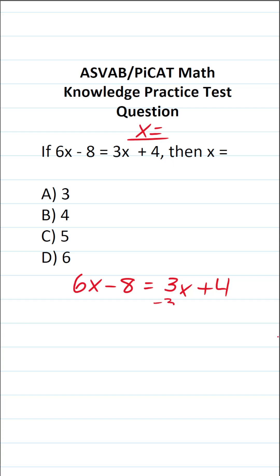The first thing I'm going to do is subtract 3x from both sides of the equation, because in doing so, I get rid of it over here. 6x minus 3x is going to be 3x minus 8 equals 4.